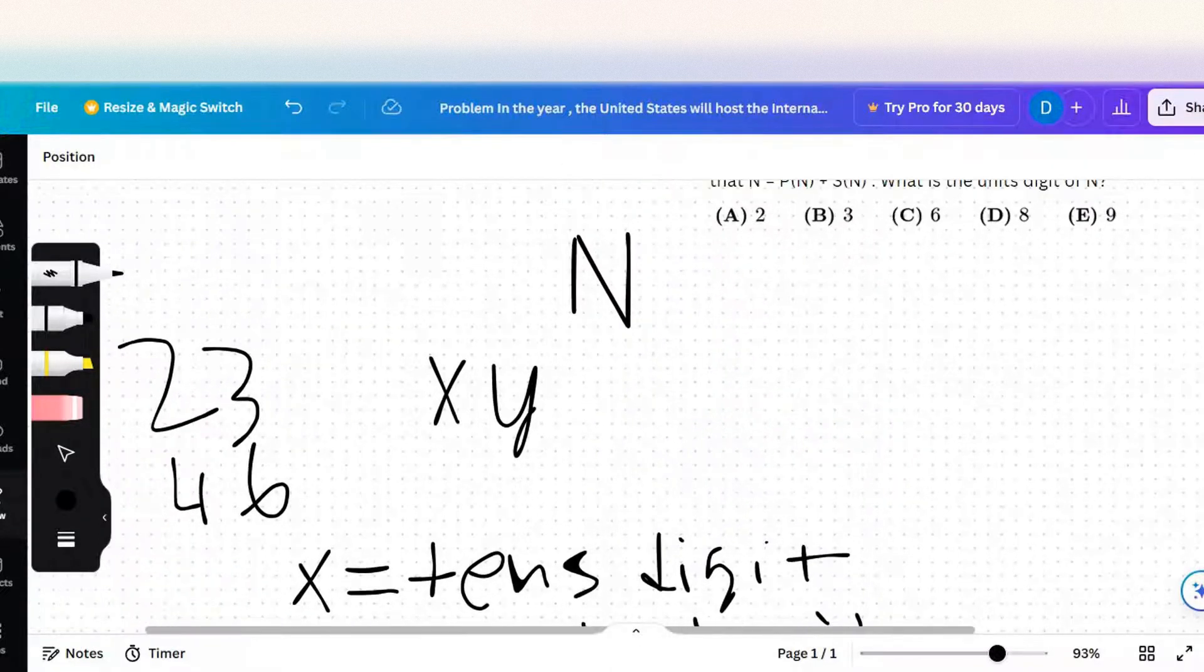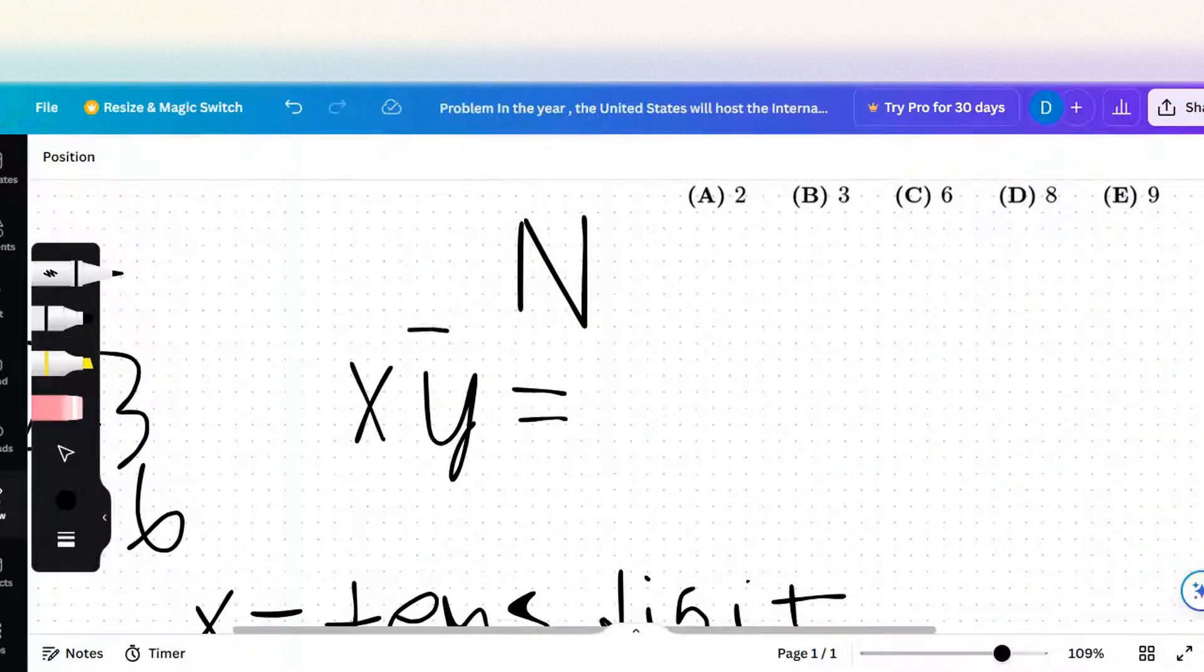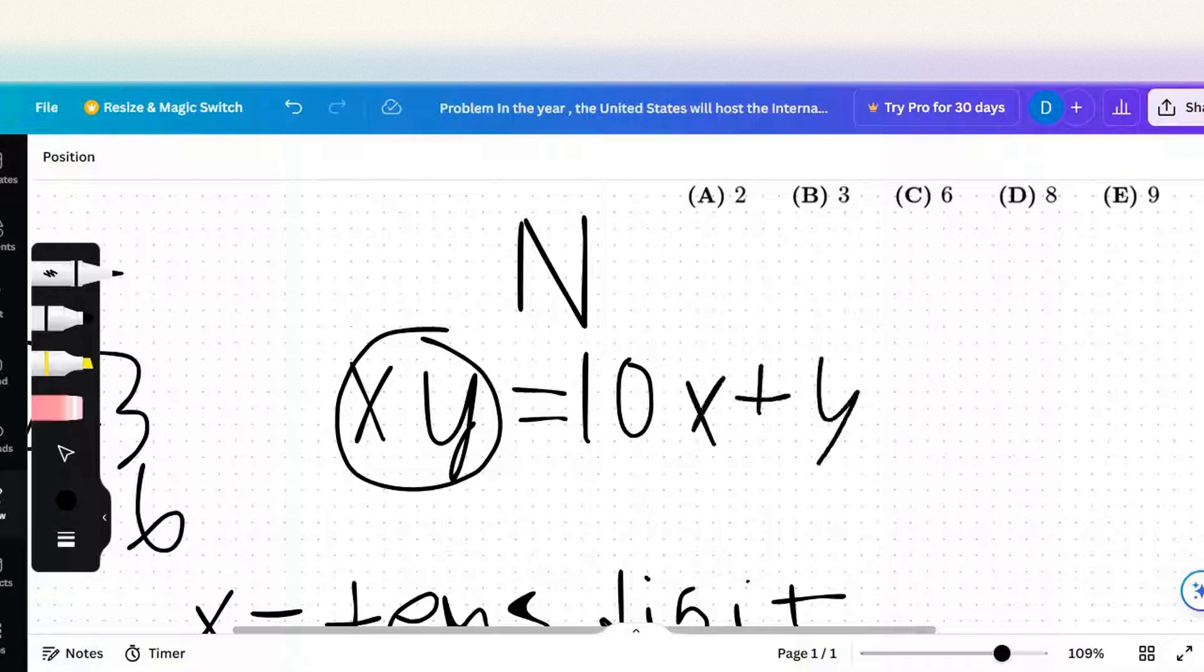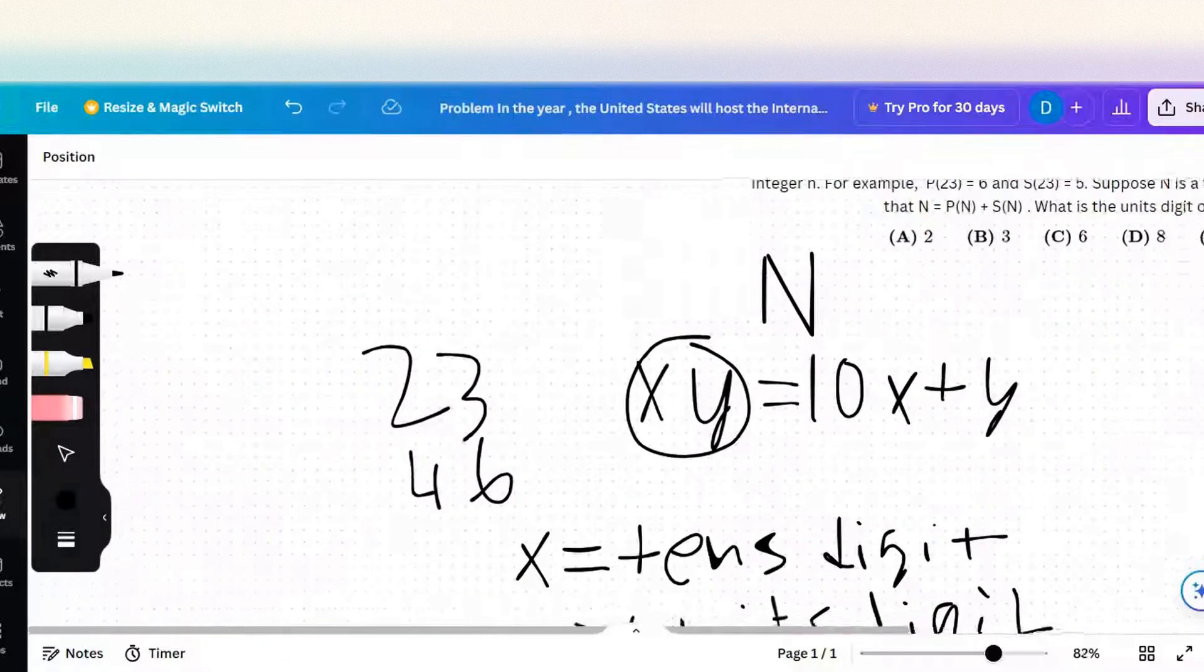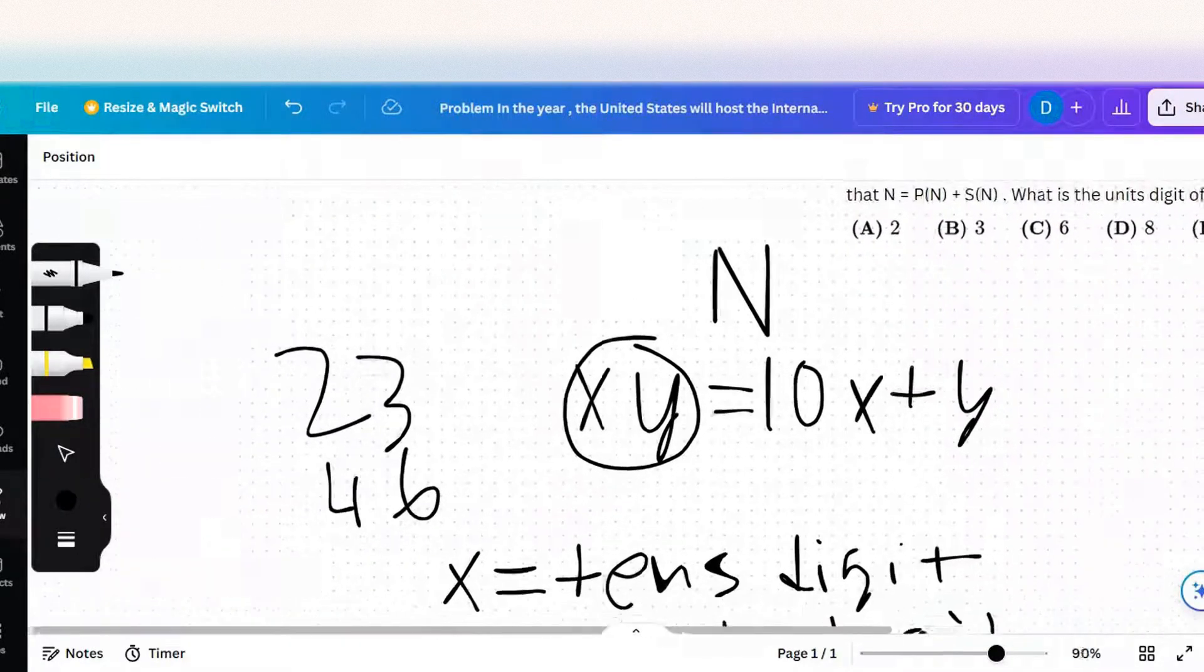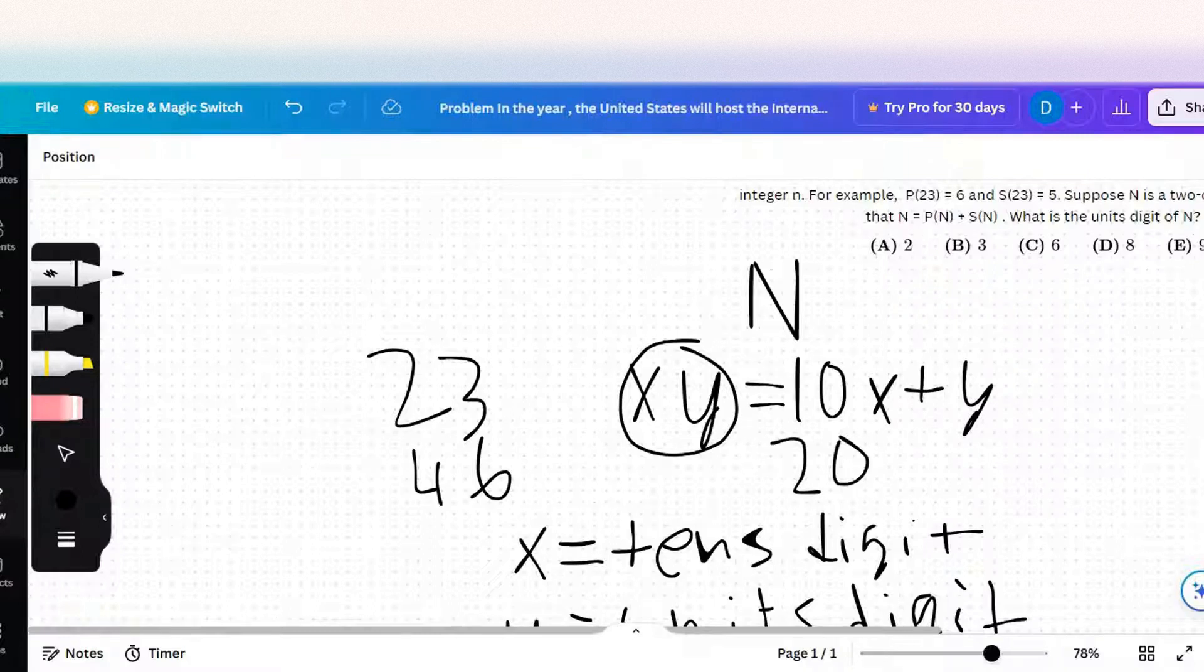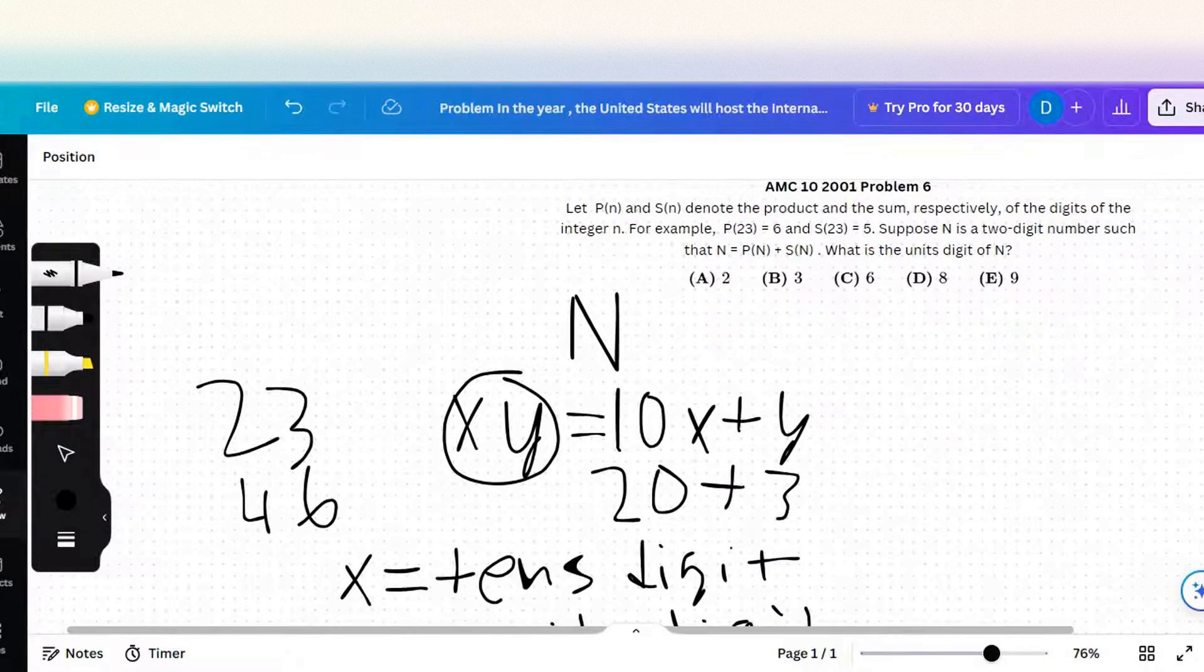That's pretty simple, but the real representation can be seen as this, but in reality it's 10x plus y. Because if you see 23, 10 times the tens digit is 20, and the units digit is 3, which equals 23, the actual number.